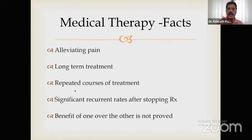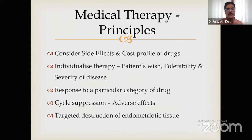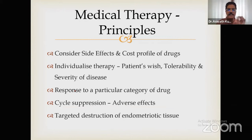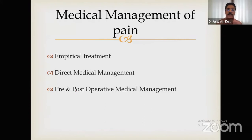In practical management, the goal is long-term pain removal requiring repeated courses of treatment, given significant recurrence after stopping. Key principles: consider the side effect and cost profile; individualize the patient — patient wishes, preference for regular periods, tolerability, and severity of disease all matter. Response to a particular drug category, cycle suppression, adverse effects, and targeted destruction of endometrial tissue should all guide your choice. Management types include empirical, direct medical, and pre- and post-operative medical management.